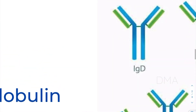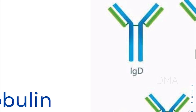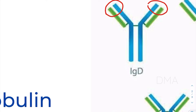As you can see, this is the classic immunoglobulin structure. The blue structure over here is the heavy chain of immunoglobulin, and the green structure over here is the light chain of immunoglobulin. This is the variable region of immunoglobulin.